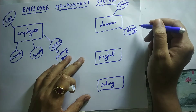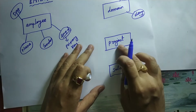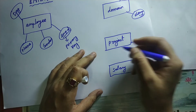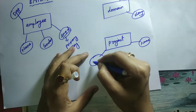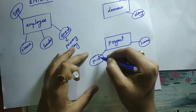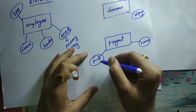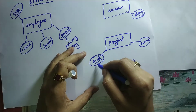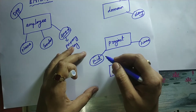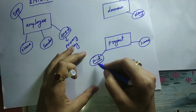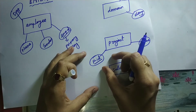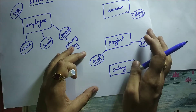Next, project. Project will also have a name and a project ID. Project ID is going to be a primary key because it will be unique, so I need to underline that. For example, if a project's ID is AB21, that same ID will not be assigned to any other project.